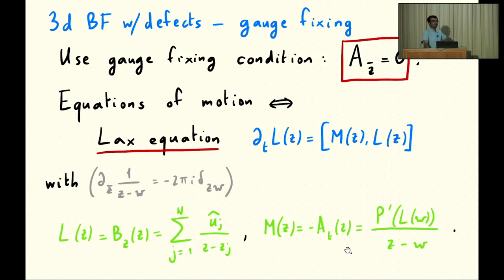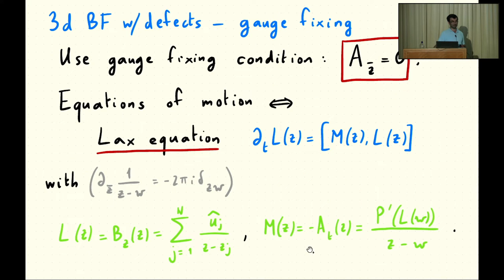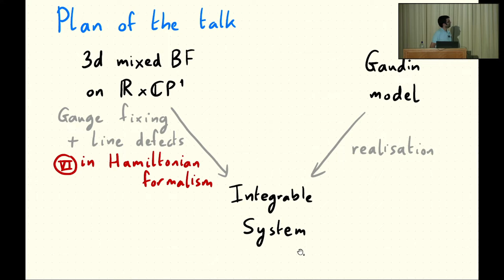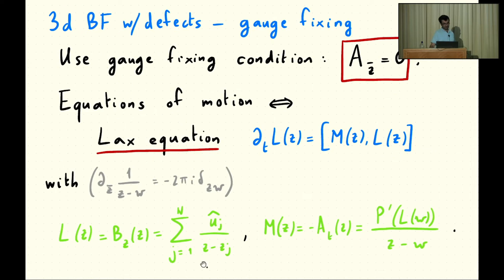To really complete the story, we have to perform a Hamiltonian analysis of 3D BF theory and show that the Poisson brackets of the gauge field reproduce those of the Gaudin model. After gauge fixing — A_Z is gone, A_{Z-bar} set to zero — all that's left is A_T and B_Z, which are the Lax pair of the Gaudin model.